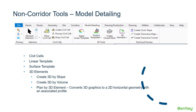We can also use the Plan by 3D Element tool, which takes a 3D graphic or 3D element and converts it into 2D horizontal geometry with an active associated profile. This is useful when we have a linear feature for a roadway that's a 3D linear element in our model but we want to break it out into horizontal and profile geometry.